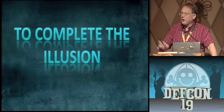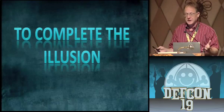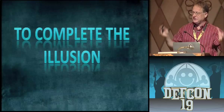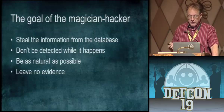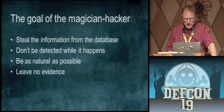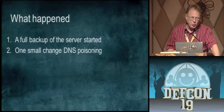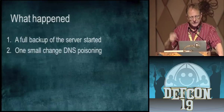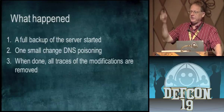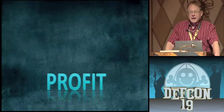Now we're going to complete the illusion. Like magic, once you know what's really happening, you're going to be disappointed because it's so simple. The magician hacker simply does a full backup of the database and, using DNS cache poisoning, redirects it to a different external server — maybe in a different country. They may not notice it. When it's all done, it cleans up all traces: the DNS cache is cleansed. As far as anyone can tell, everything looks perfectly fine. Therefore, you have profit.